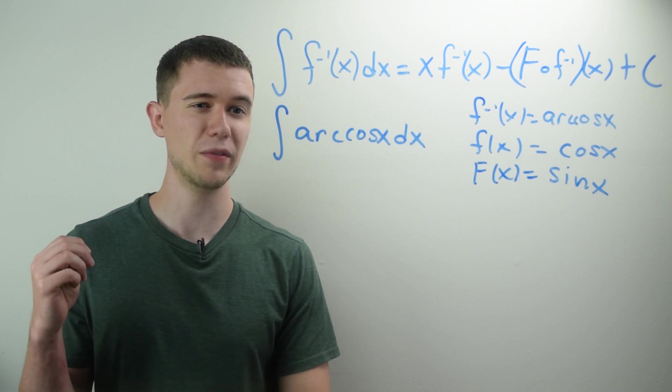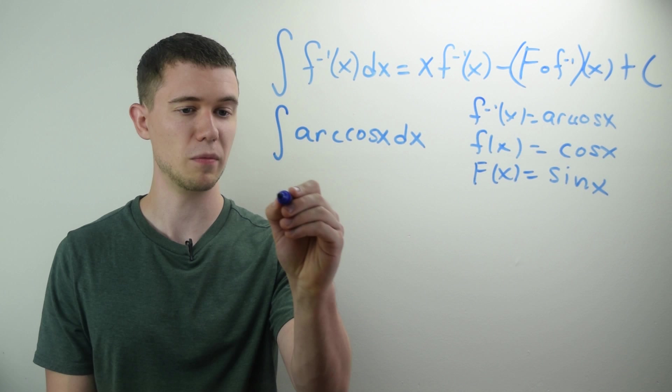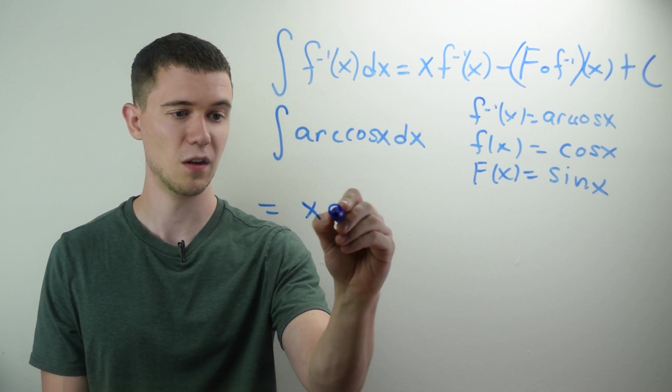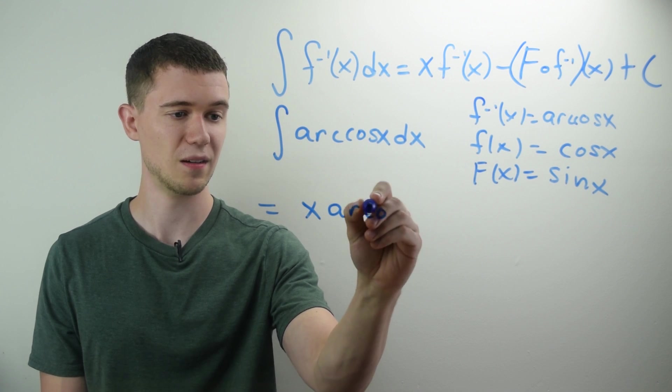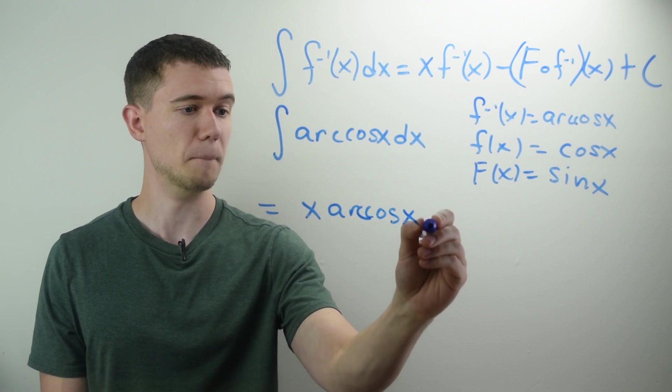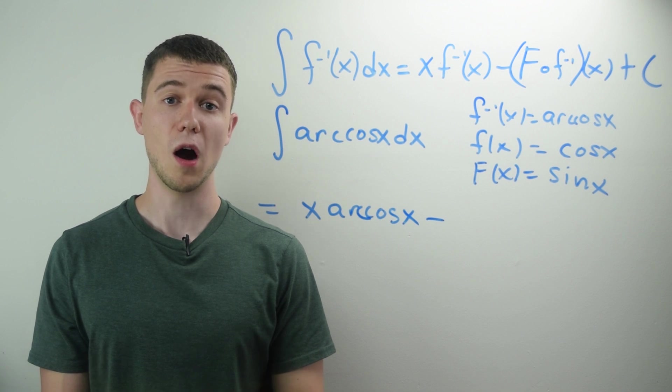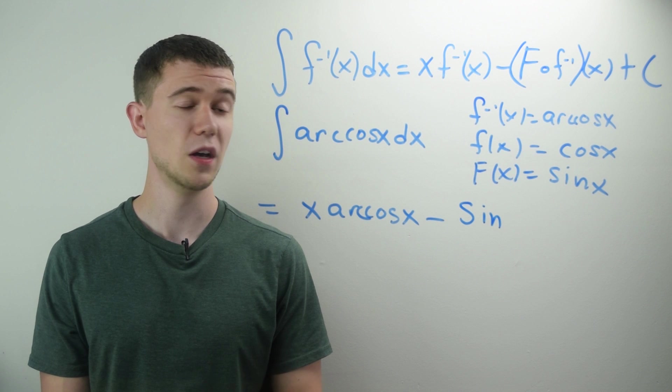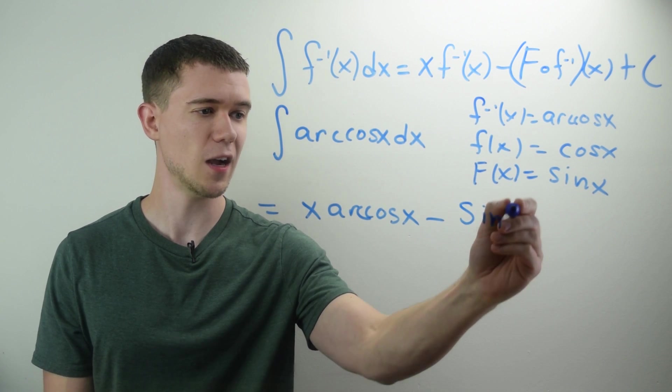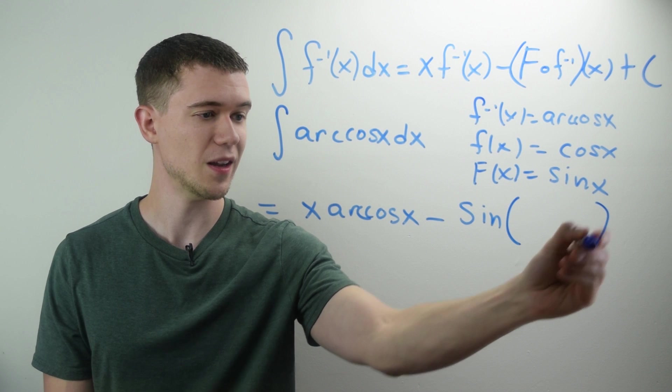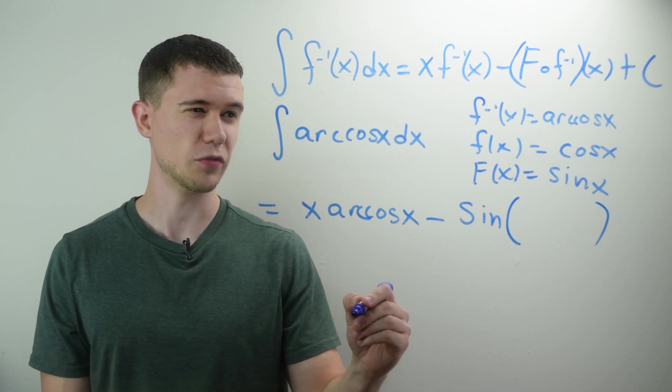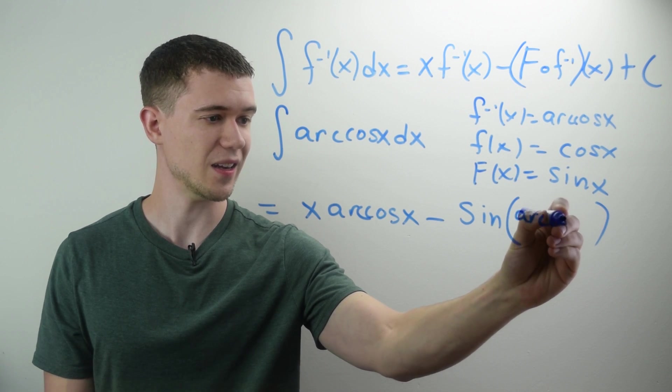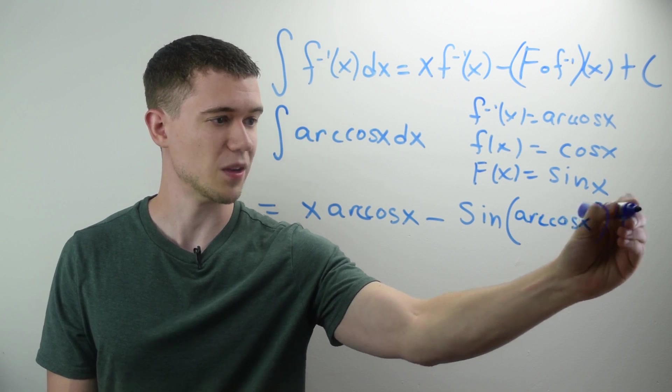And now we have all the pieces to plug into our formula. So the antiderivative of arc cosine of x following this formula would be x times f inverse of x. So that's arc cosine of x minus uppercase F, so that's the sine of x, composed with f inverse of x. So it's not times, I have to actually evaluate sine x at our inverse function. I'm going to plug arc cosine inside of sine x plus c.